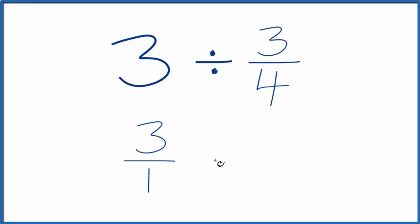Instead of division, we're going to use multiplication. And we're going to multiply by the reciprocal of 3 fourths. To take the reciprocal, you move the numerator to the bottom and the denominator to the top. So we'll have 4 over 3.